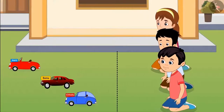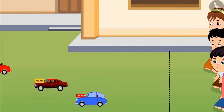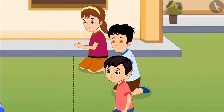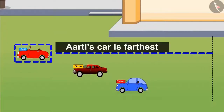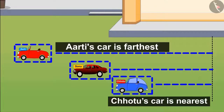One, two, three — all the cars started moving! After some time all three cars stopped. Let's see which car stopped at the farthest point and which stopped at the nearest distance. Aarti cheered: 'I won! My car is the farthest from here. Sonu's car is behind my car, and Chotu, your car is nearest to us!'